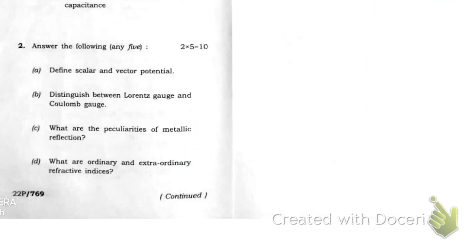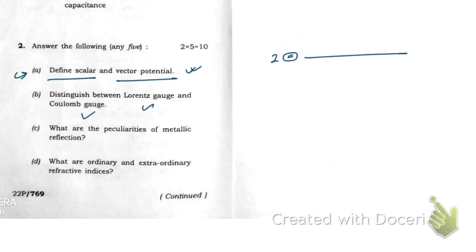Question 2a asks to define scalar and vector potential, and question 2b covers Lorenz gauge and Coulomb gauge. I have already made videos on these topics. The links are provided in the description box — written as 2a and 2b — so check the description for those answers.